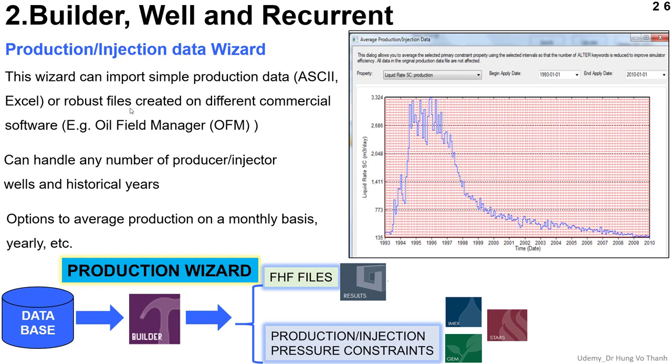The easy way, after you get the data from Oil Field Manager, you can handle any number of producer or injector wells and historical years. I can make a note here - even though I talk about historical years, you can define by day, month, or hour if you have your record data. Optionally, they try to make the average production on a monthly basis or yearly basis. So don't worry about this kind of information. Whatever your data is from a day, year, or month, it will be easy to import to CMG.